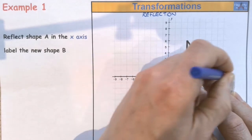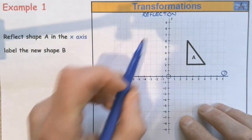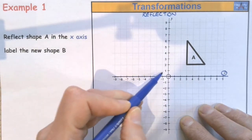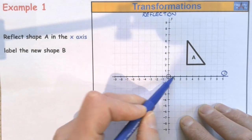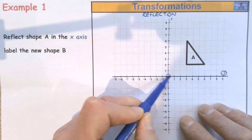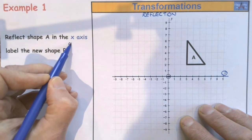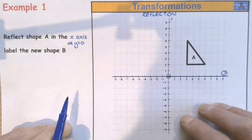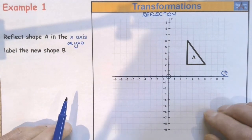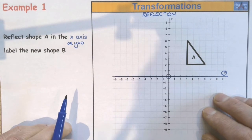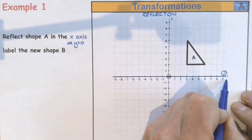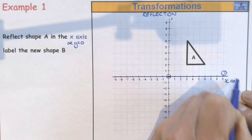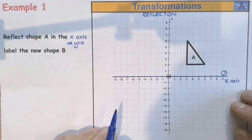Sometimes this is called y equals 0. So if you can see where I'd be ticking off my y's, I would be through y equals 0. They're the same thing. So there's my line of reflection along the x-axis.